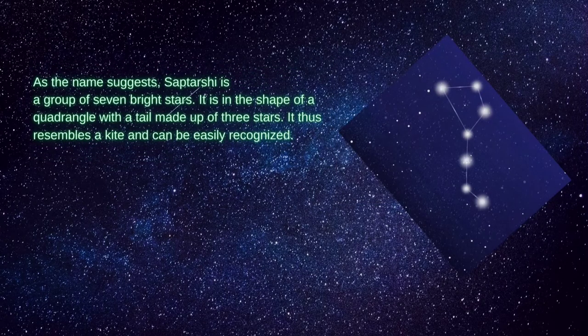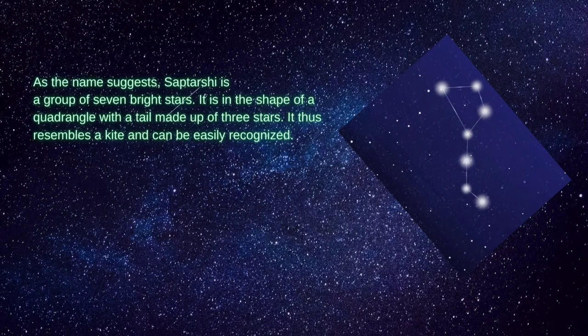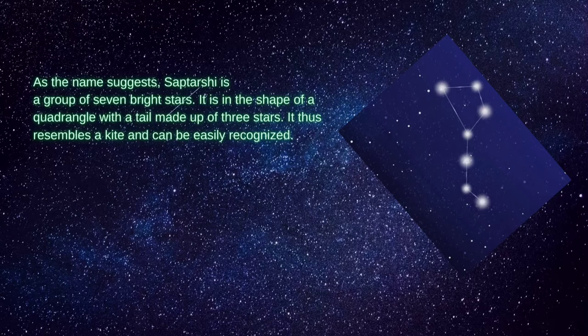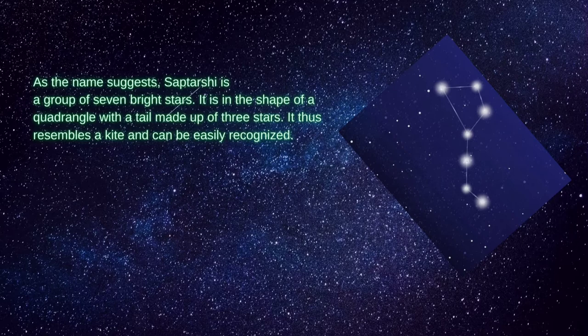As the name suggests, Saptarshi is a group of seven bright stars. It is in the shape of a quadrangle with a tail made up of three stars. It thus resembles a kite and can be easily recognized.